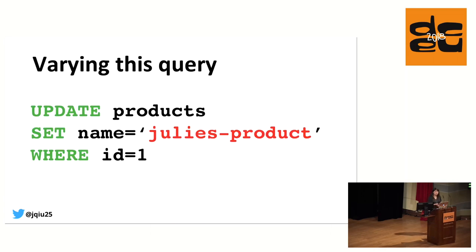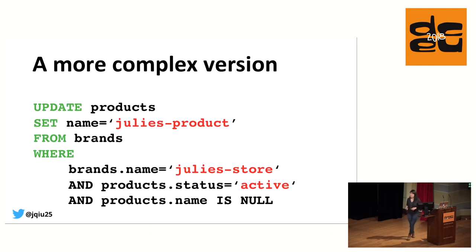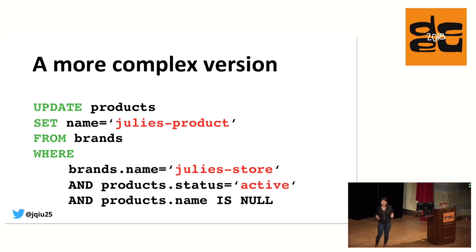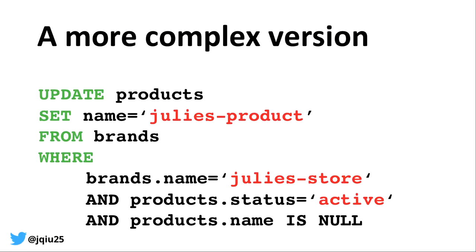For example, let's go back to that query and consider a more complex variation. What if the marketing team hadn't given me a product ID? What if instead they said: hey Julie, we have this brand called Julie Store, and there are a bunch of products in it — we need you to update every product that doesn't currently have a name but is active to be named Julie's product. We can see how queries can get pretty complex really quickly.